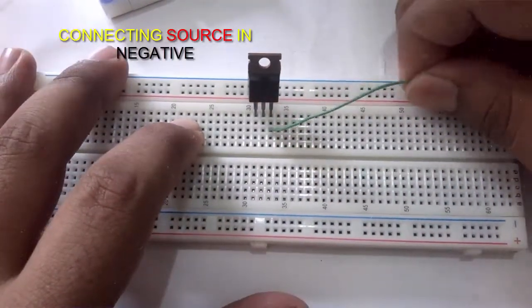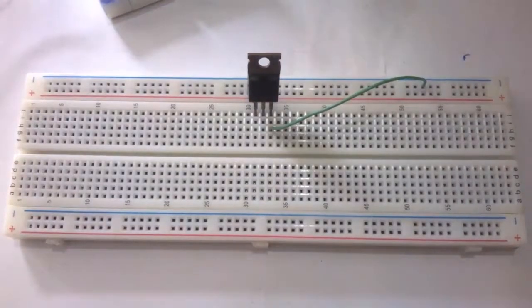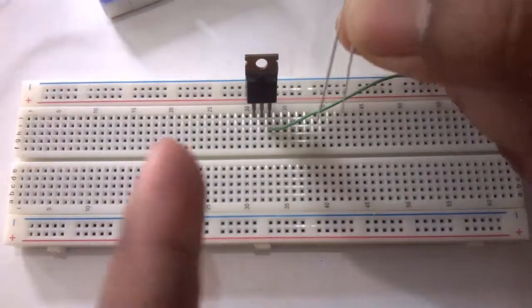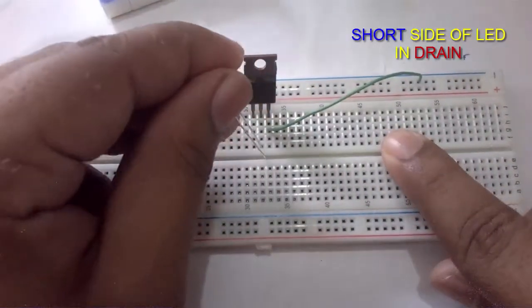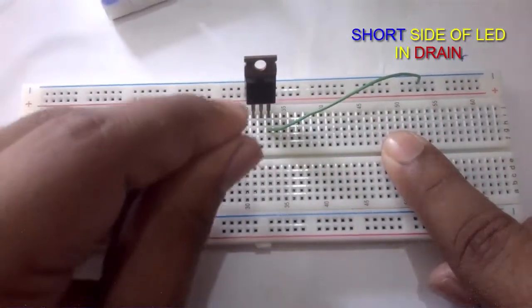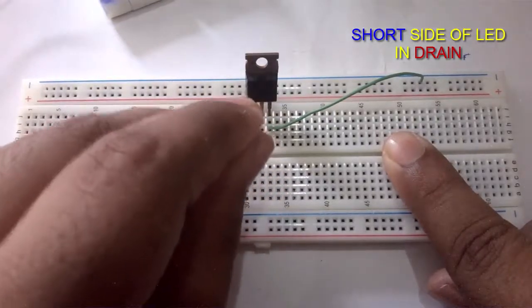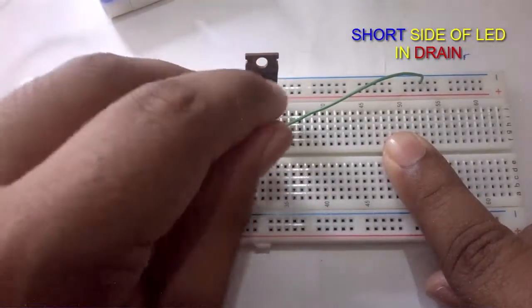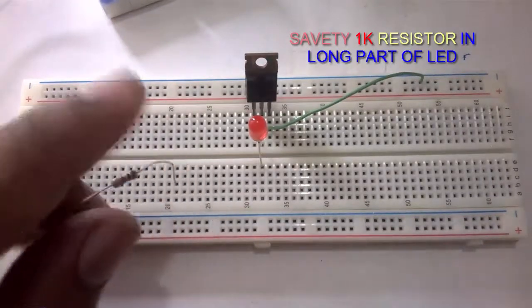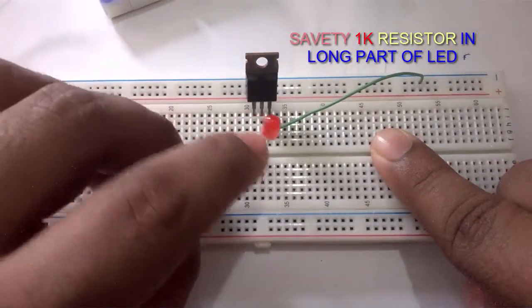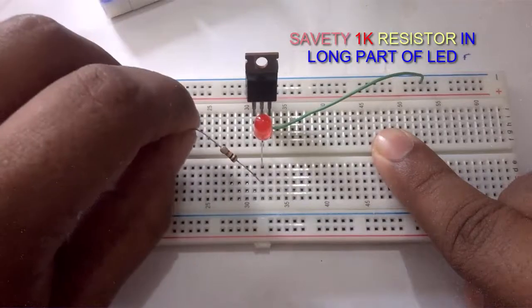As you know, the long part is positive, so the short part of the LED is connecting in the drain, and the long part of the LED is connecting with a 1K resistor to protect the LED.